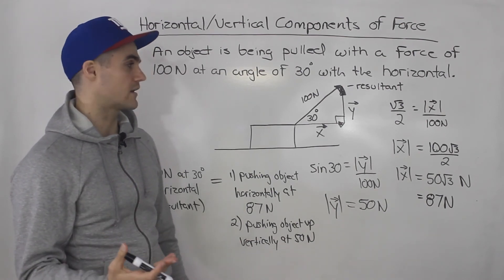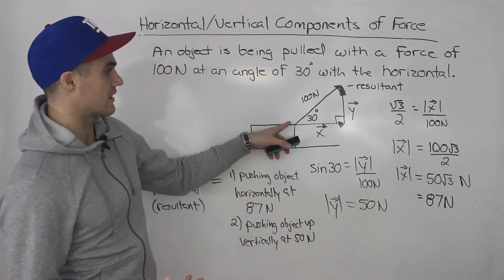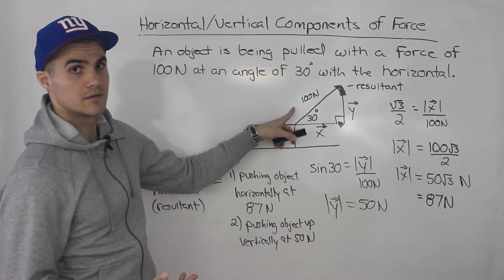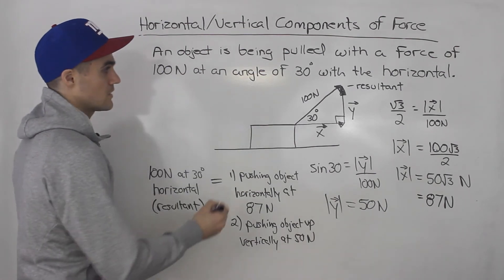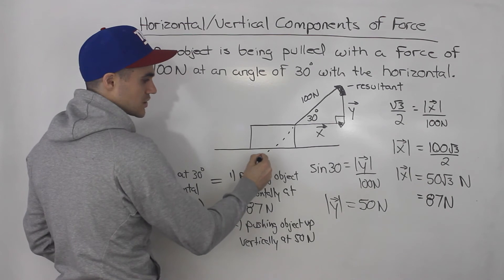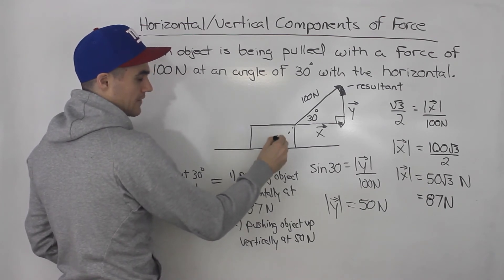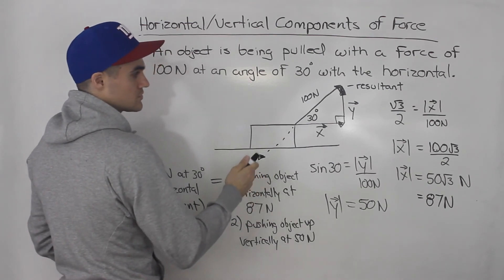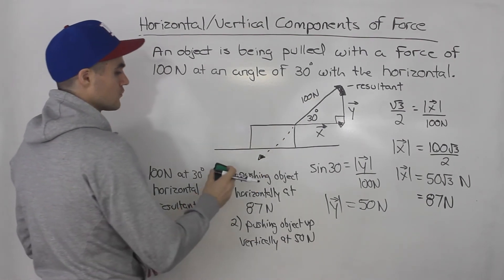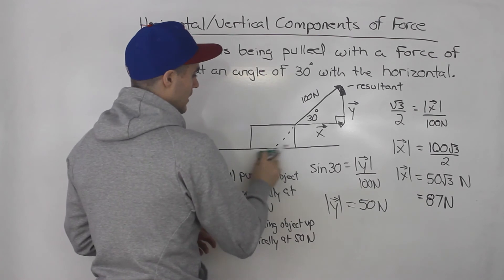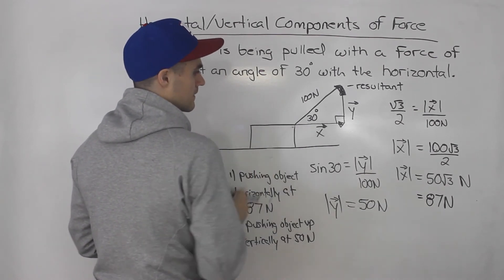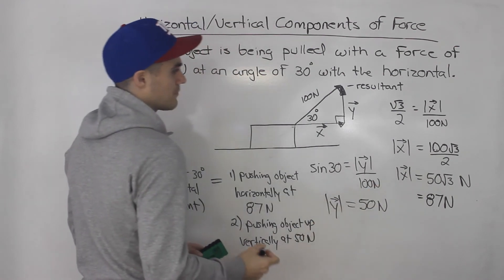The equilibrium vector is basically a vector that is the opposite direction of the resultant but has the same magnitude. So if we had another force acting on this object in the opposite direction at a magnitude of 100 newtons — the opposite direction of the resultant — then this object would not move. Now what about equilibrium forces on the components?